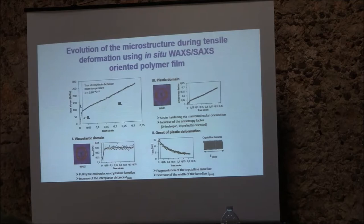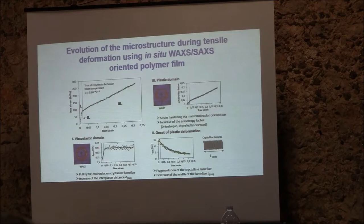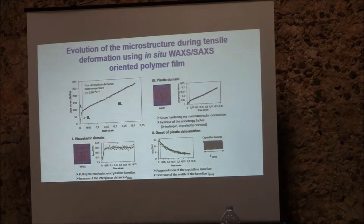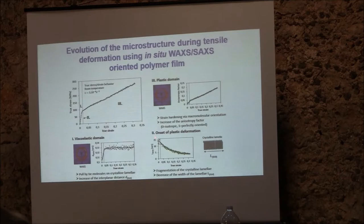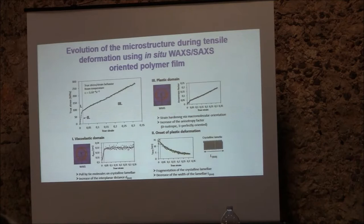Martin also performed classical mechanical property measurements. For this membrane, we can identify three deformation domains. In the elastic domain, we are pulling the tie molecules between the crystalline lamellae in the amorphous region, and we record an increase in the interplanar long period from SAXS data. At the onset of plastic deformation, we observed fragmentation of the crystalline lamellae and a decrease in lamellar width with increasing strain. In the plastic domain, there was strain hardening via macromolecular orientation and an increase in the anisotropy factor alpha.